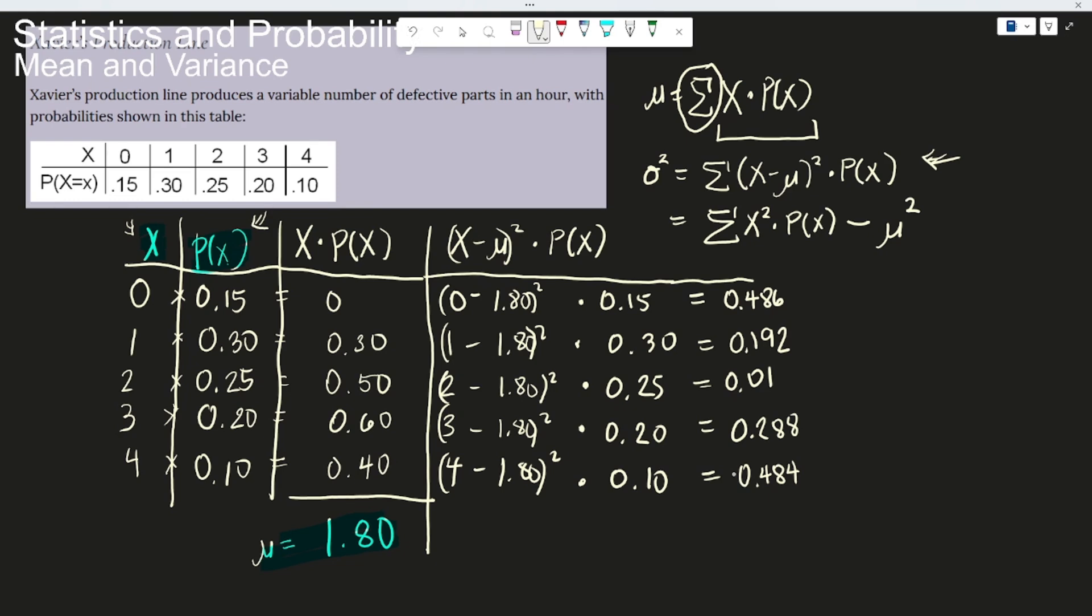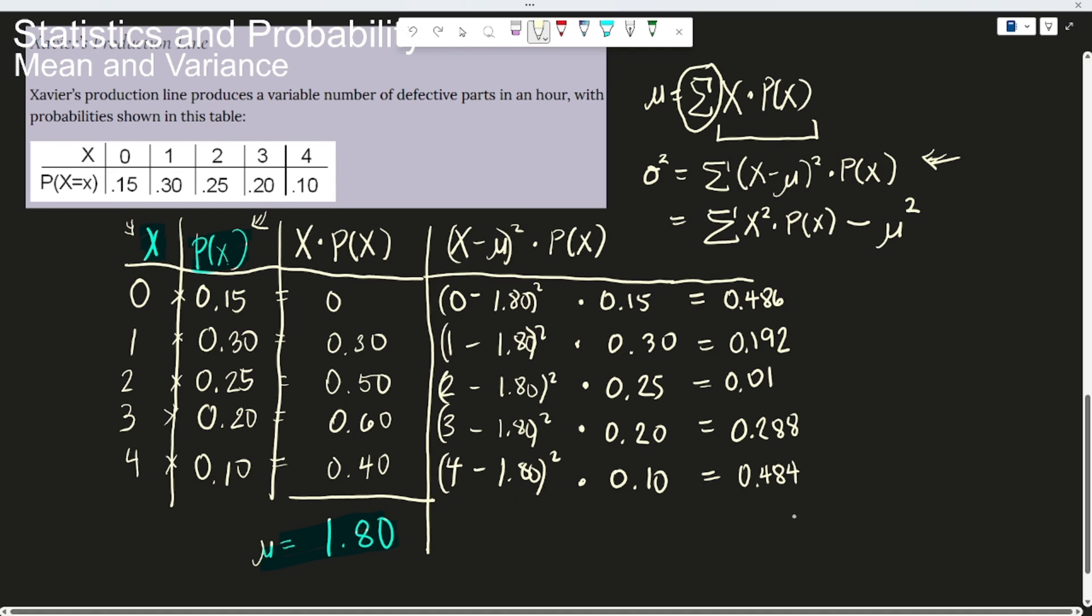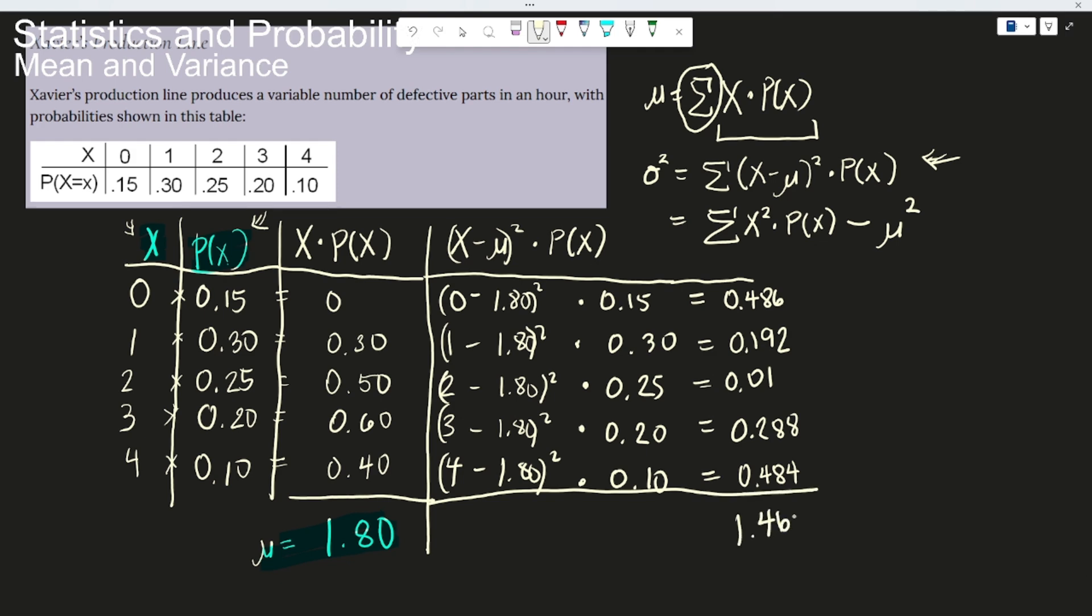So we calculated one by one the values here. Okay? x minus mu squared times p of x. And then after this, we need to add all of them. So we'll get the sum. And the sum here would be the variance. So the sum here would be 1.46. So this now is your variance.